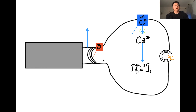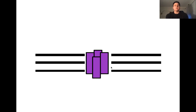The neurotransmitter we're going to be focusing on today is glutamate. Glutamate can bind to a number of different receptors; however, the receptor we're focusing on is the AMPA receptor. In the target cell, the AMPA receptor is an ionotropic receptor — in other words, a ligand-gated ion channel. It has four subunits, so it is a tetramer, and each of these subunits has a binding site for glutamate.